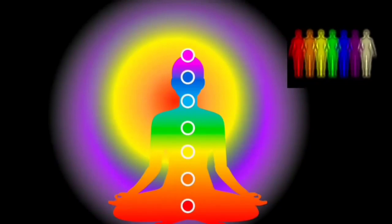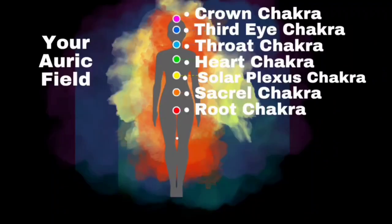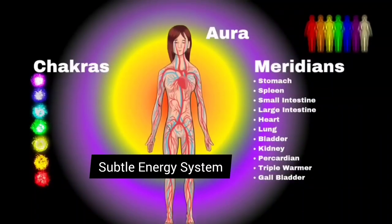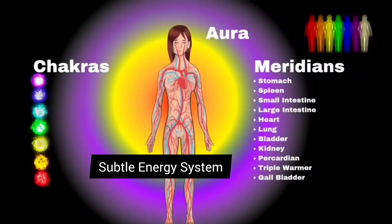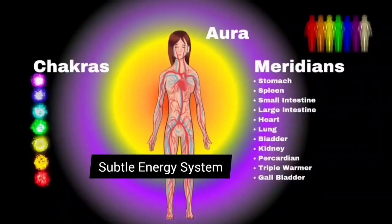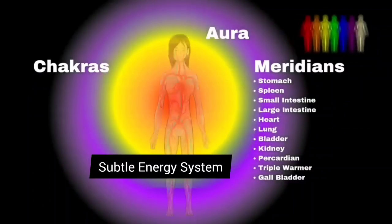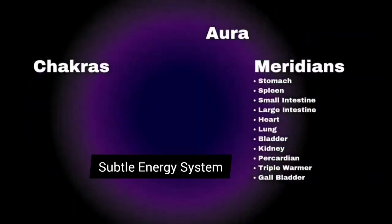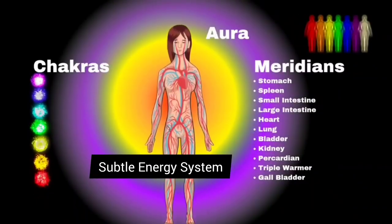Subtle energy — what is it? First let's learn about the subtle energy system of the body. The subtle energy system has three components: the meridians, the chakras, and the aura. Meridians, or nadis, are pathways in which energy travels within our tissues; this runs on each side of the body. There are 12 major meridians: the stomach, the spleen, the small intestine, large intestine, heart, lung, bladder, kidney, pericardium, triple warmer, meridian, and gallbladder. On each side it mirrors the other side, and each meridian is correlated to an internal organ.